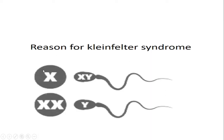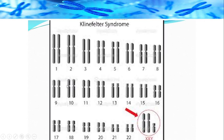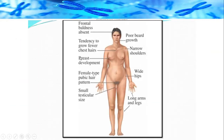The reason for Klinefelter syndrome can be a normal ovum fertilized by an abnormal sperm, or an abnormal ovum fertilized by a normal sperm. In the karyotype, you can see the encircled area shows two X chromosomes and a Y chromosome. The features of a Klinefelter syndrome patient include breast development, but overall the individual is male.